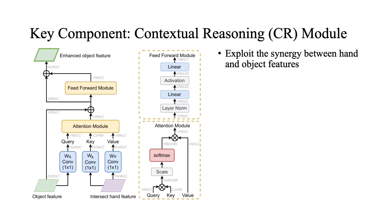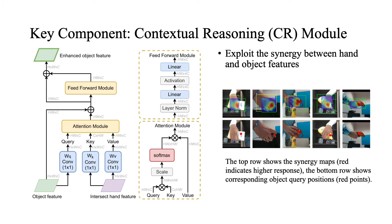Inside the contextual reasoning module, we adopt the transformer architecture. On the right-hand side, we visualize the synergy maps of different object query positions in the contextual reasoning module.